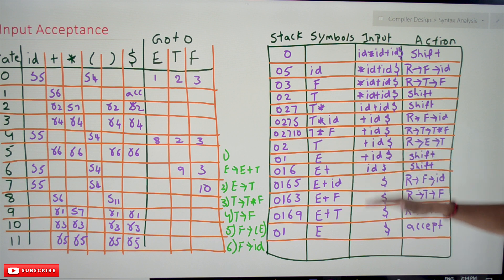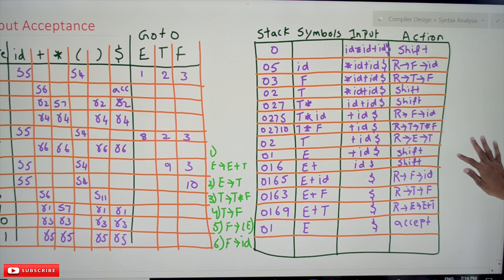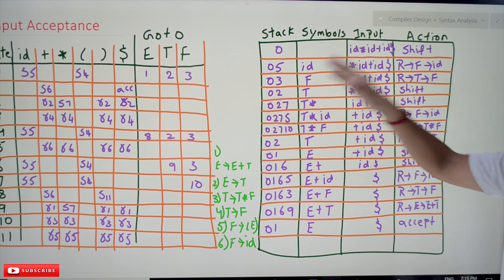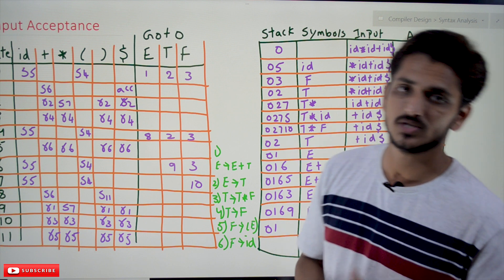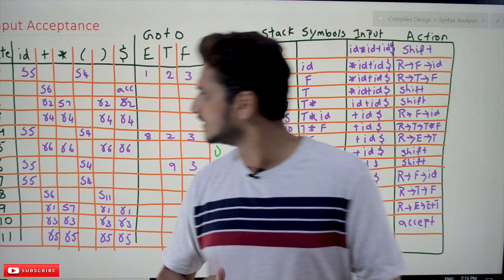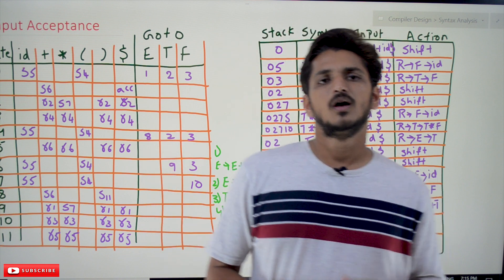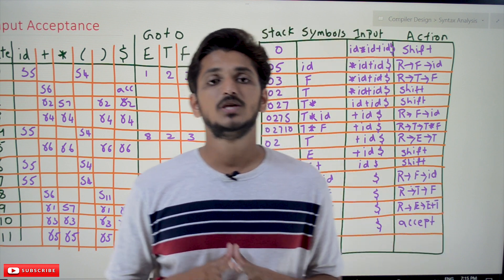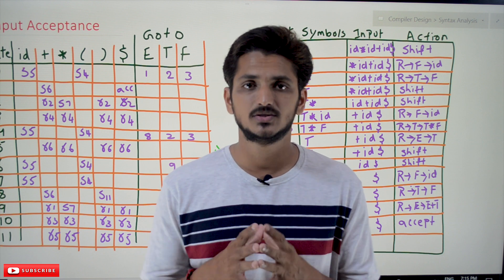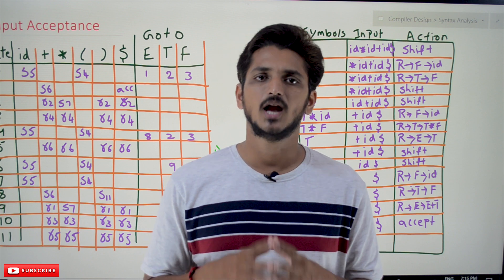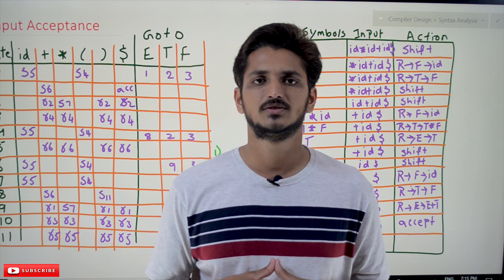Hope you understand the concept of how we use this table to identify the acceptance of a given input string using the SLR(1) parsing table. If you have any questions, please post them in the comment section below. Thanks for watching — if you haven't subscribed to our channel, please subscribe and press the bell icon for the latest updates. Thank you.